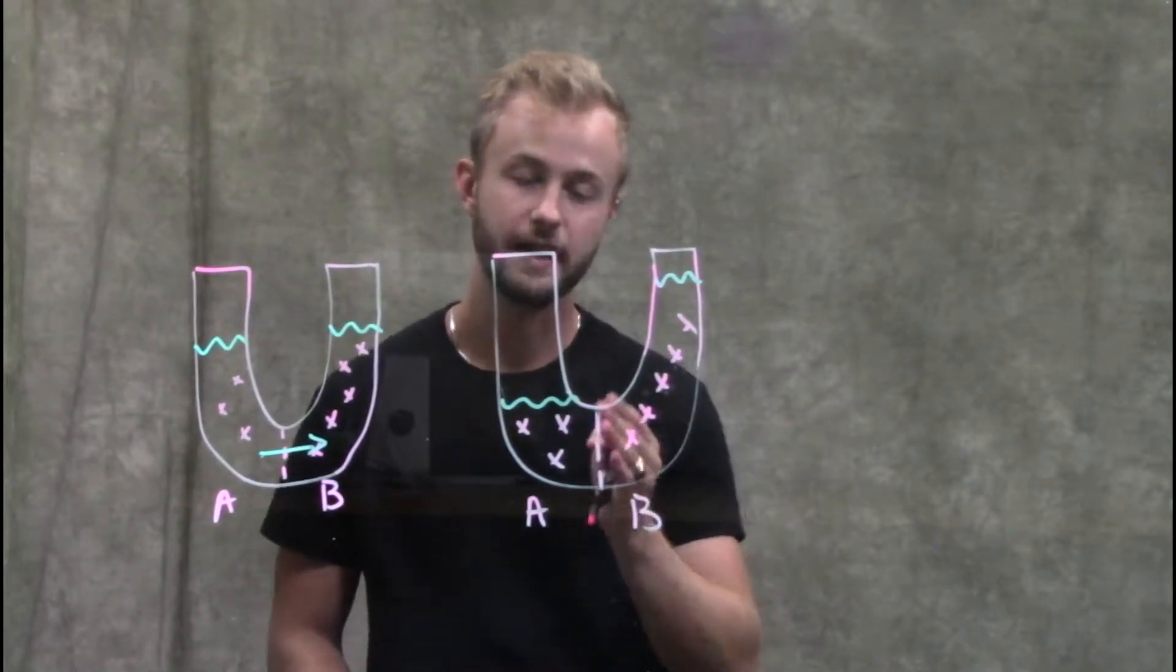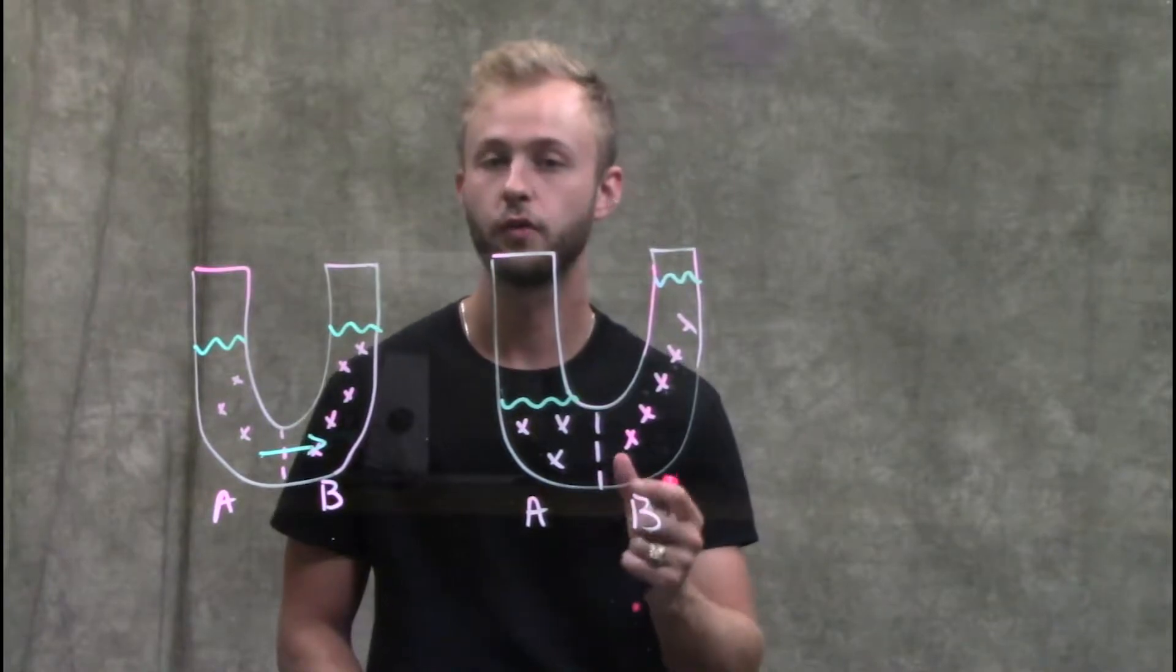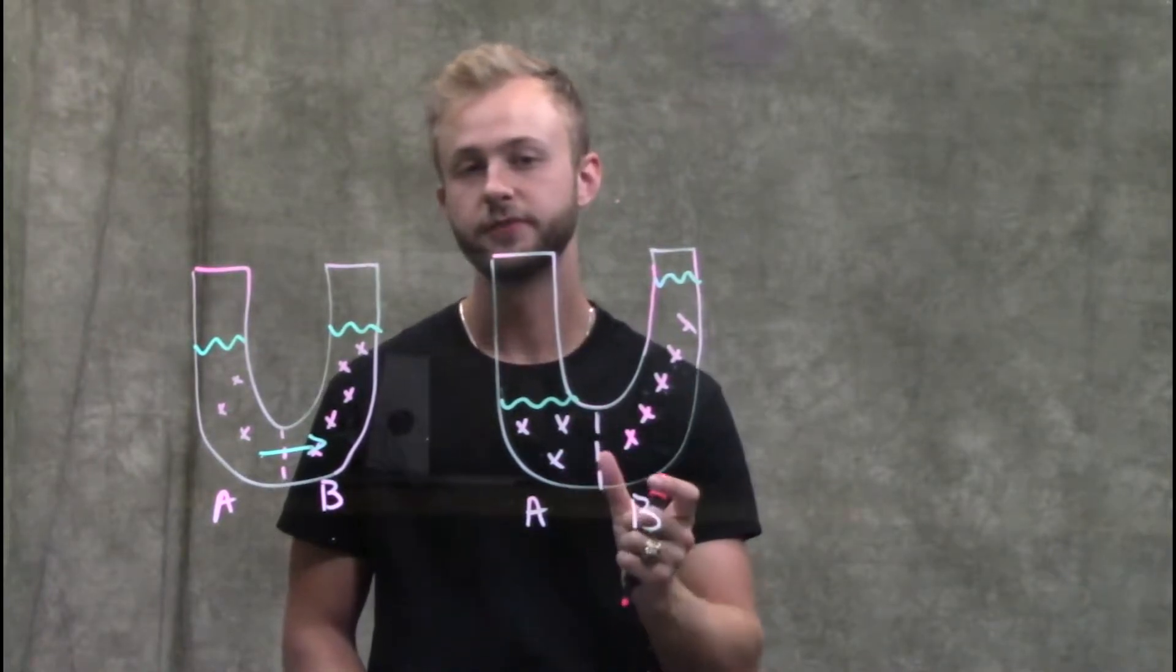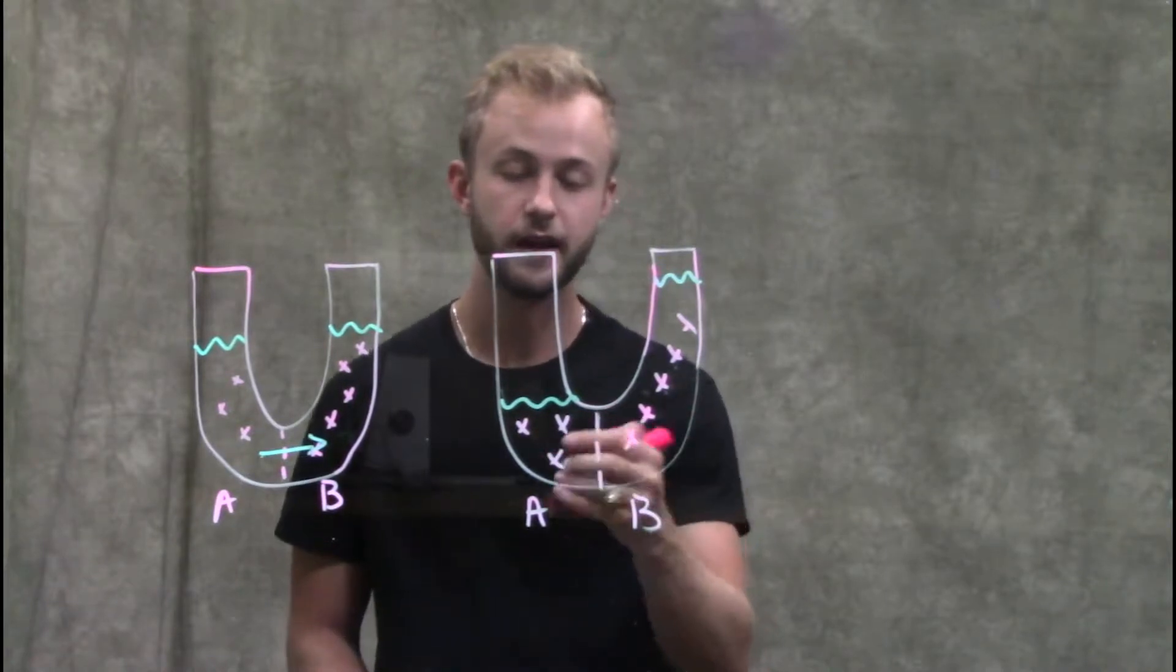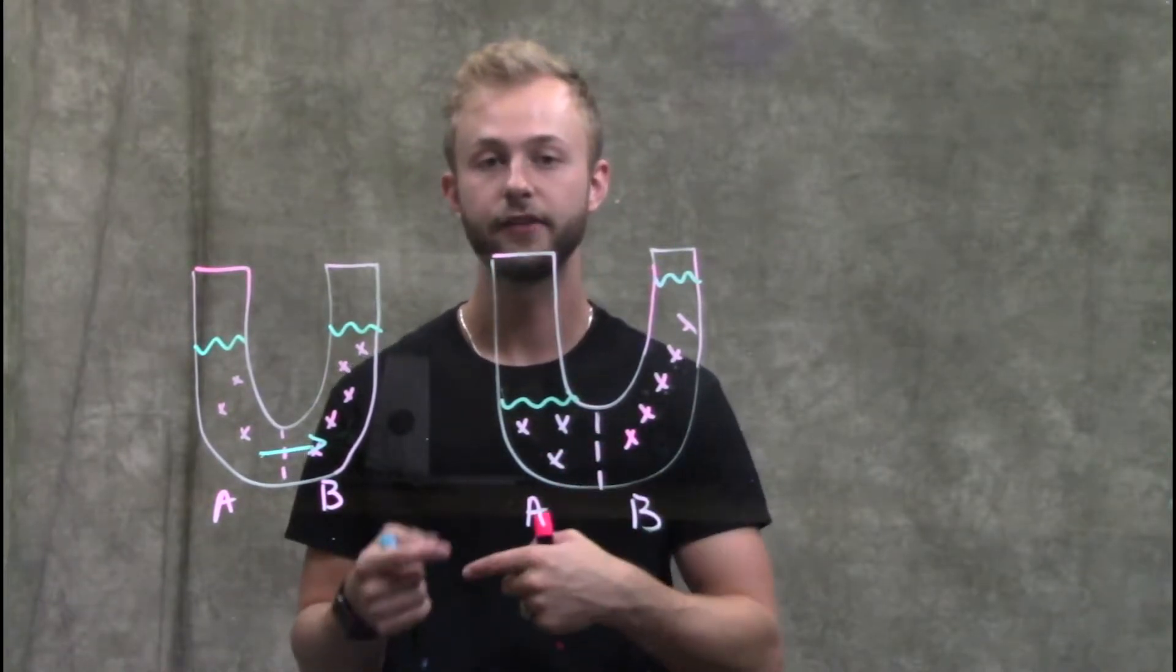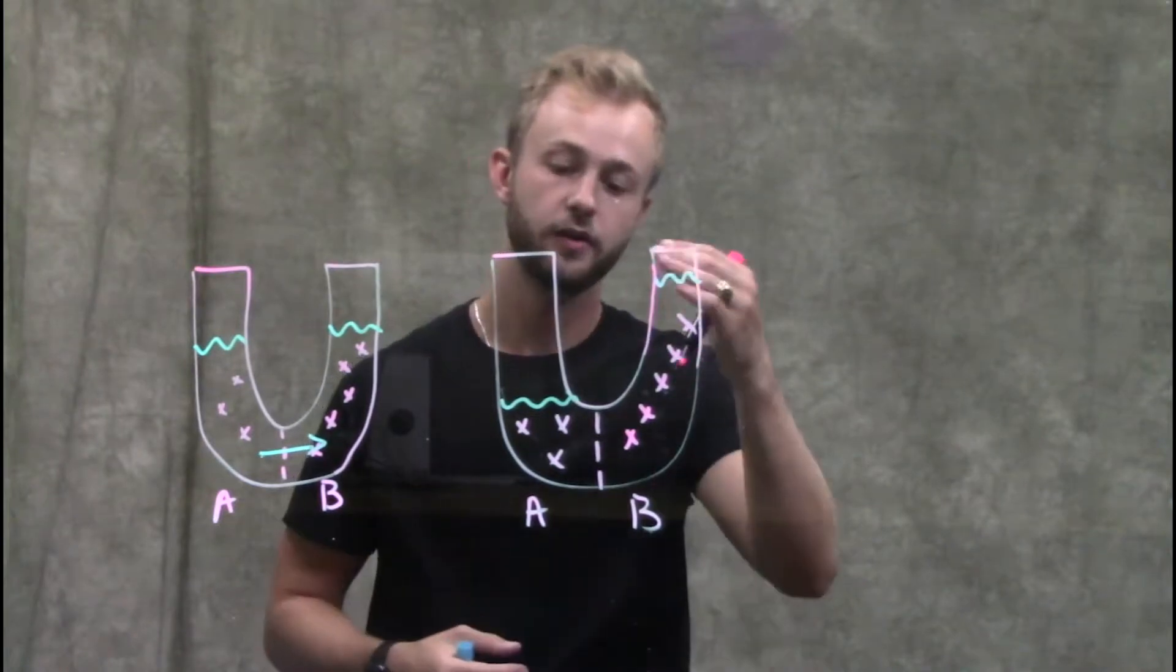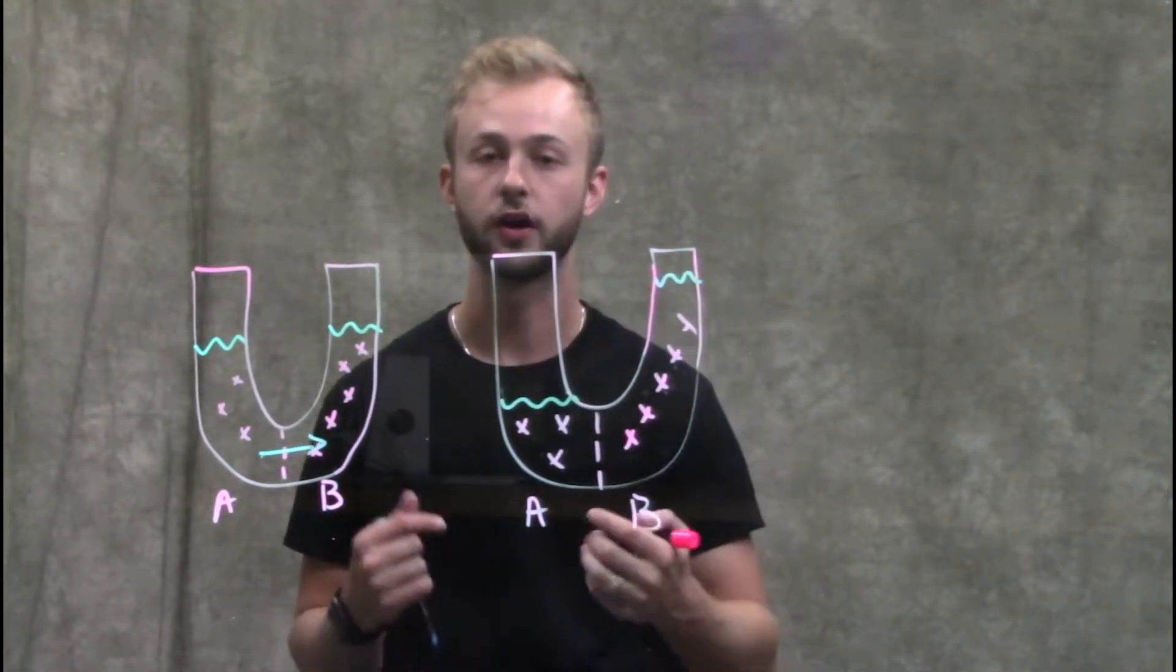It's important to note that when we're at equilibrium, that doesn't mean water has stopped moving. This just means we have no net movement of water. Water is still moving back and forth across this membrane in either direction at equal rates, so we're not going to see any more change in the water level.